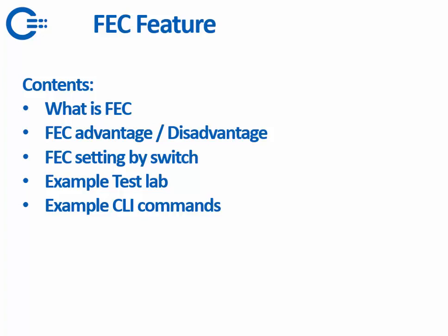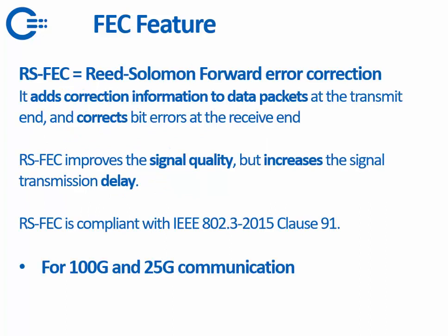First, what is FEC? FEC is RS-FEC — Reed-Solomon Forward Error Correction. It adds correction information to the data packets at the transmitting end and corrects bit errors at the receiving end. That's basically what FEC does: it improves signal quality, but it increases the transmission delay.